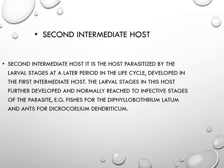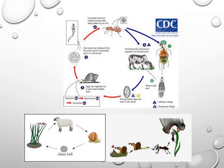The second intermediate host is the host parasitized by larval stages at a later period in the life cycle. Larvae that developed in the first intermediate host further develop here and normally reach the infective stage. Examples include fish for Diphyllobothrium latum and ants for Dicrocoelium dendriticum, both acting as second intermediate hosts. Here you can see how the fluke Dicrocoelium dendriticum reaches humans or ants, and how the ants become infected.